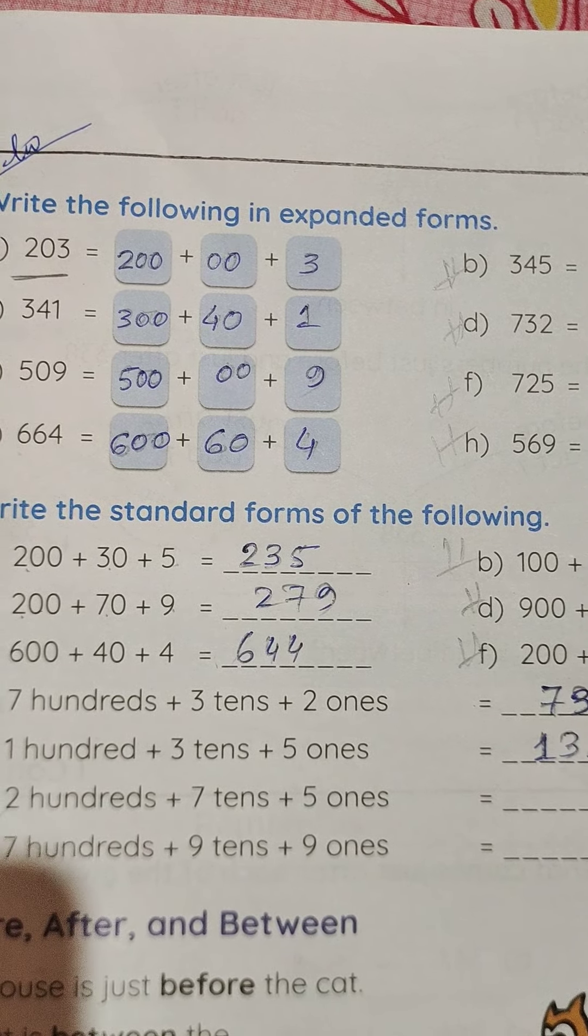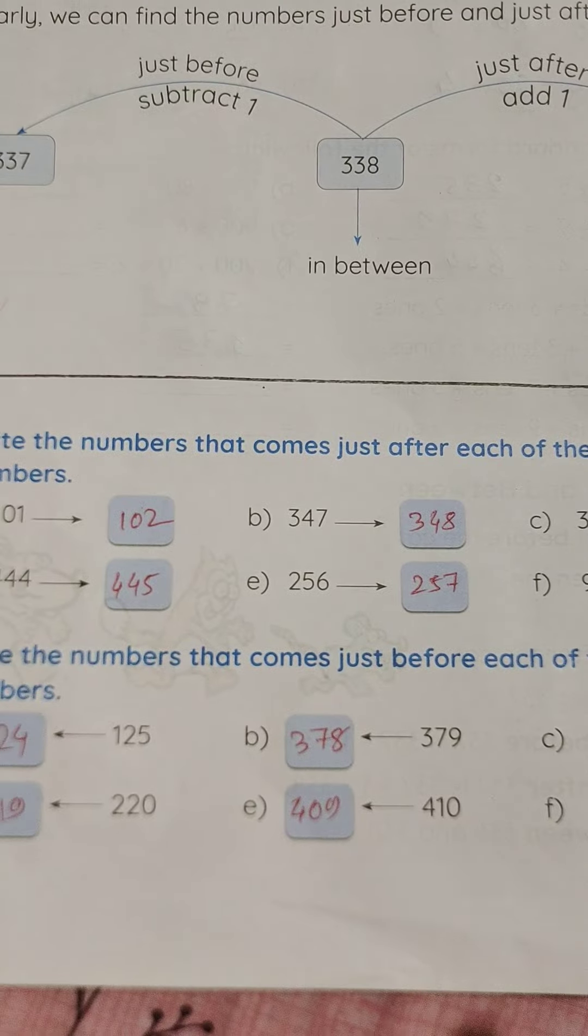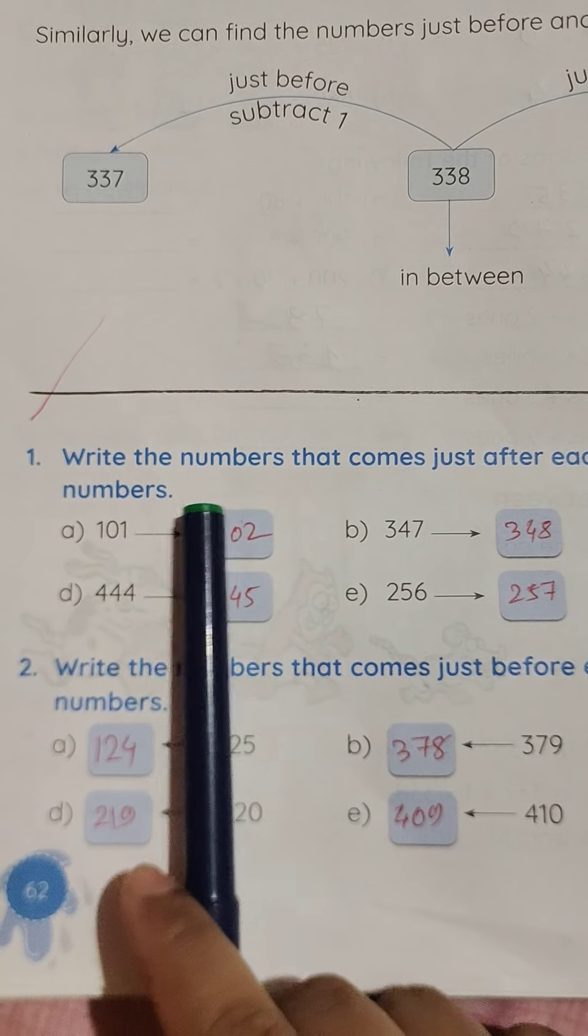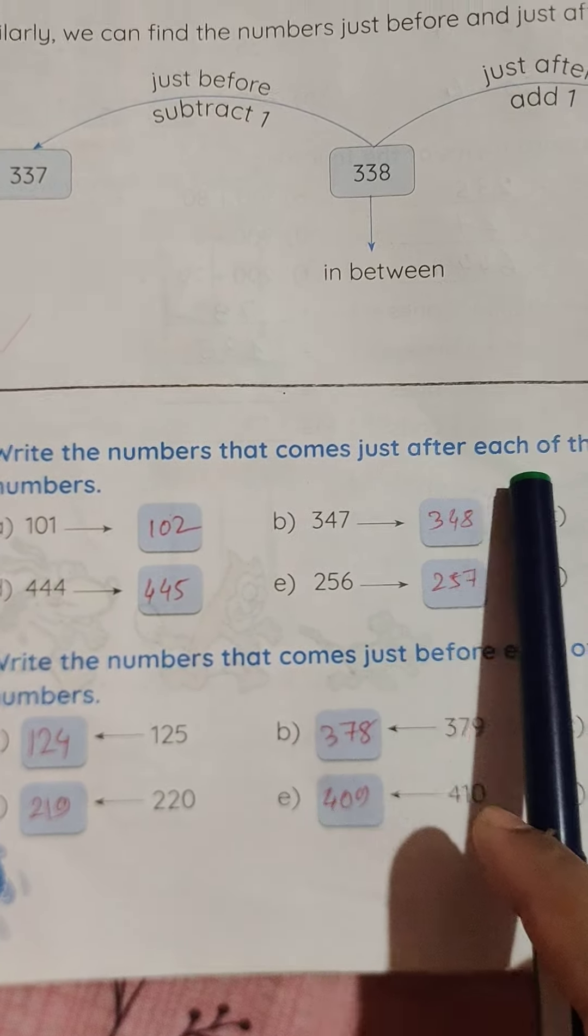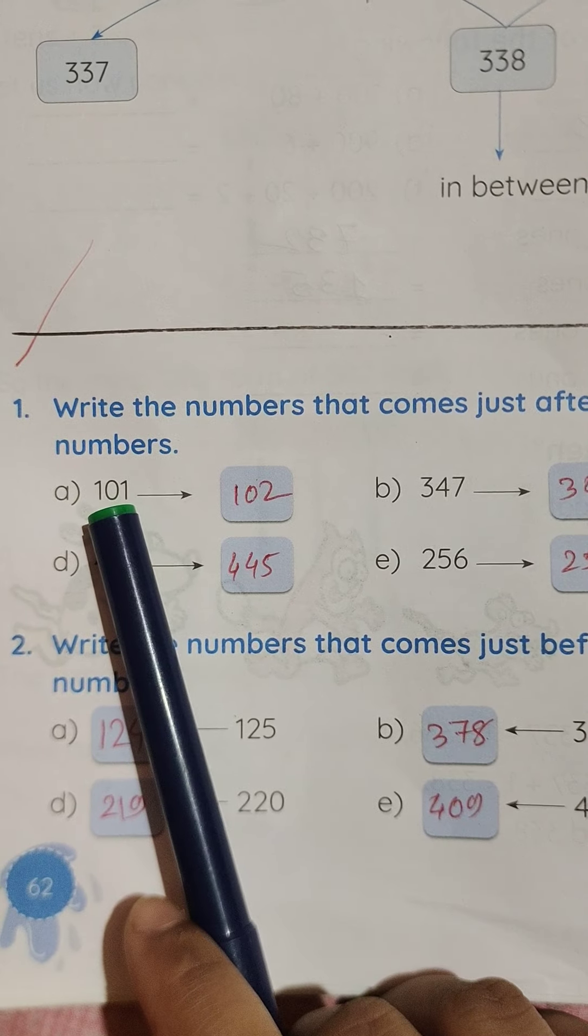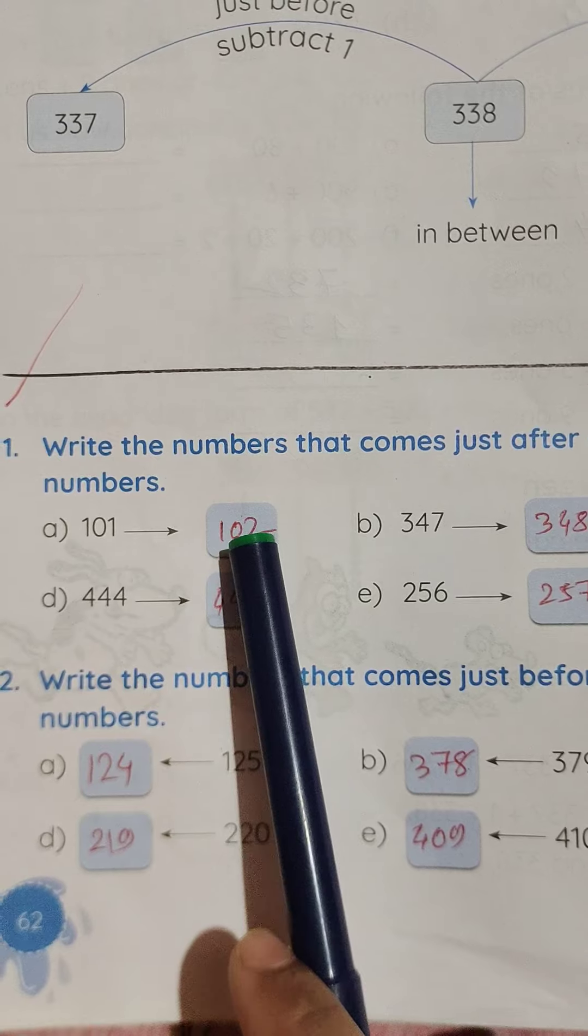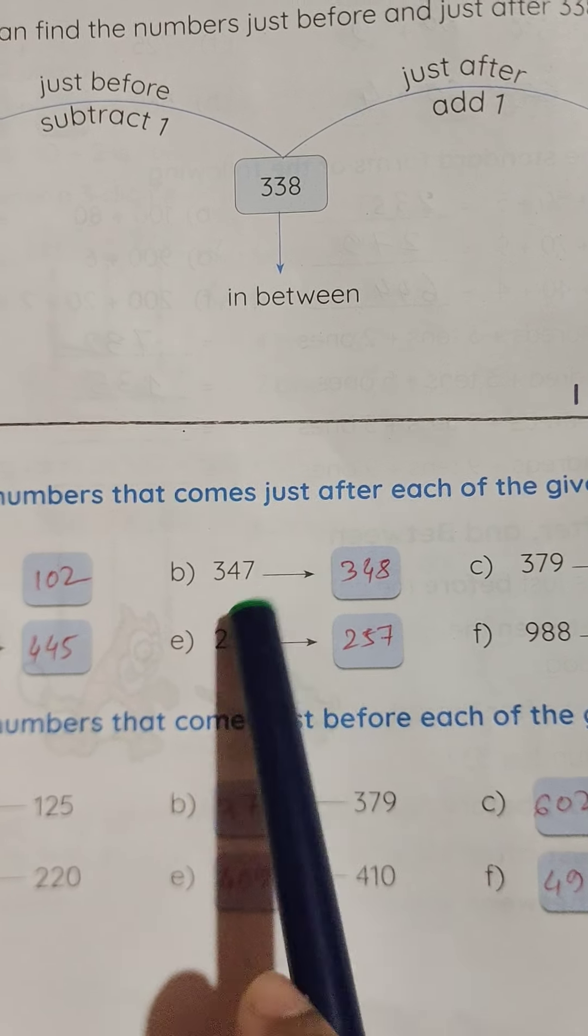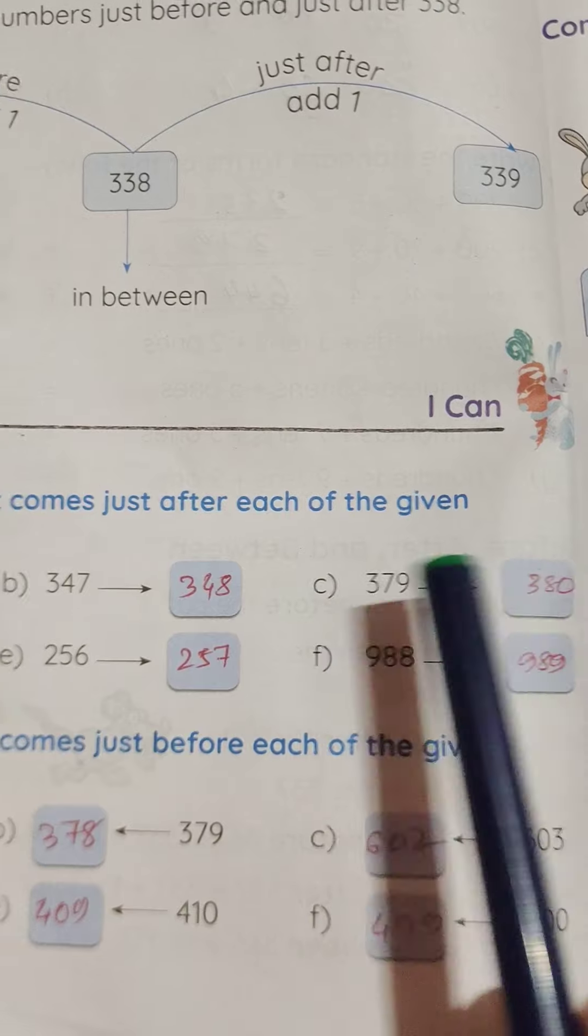Turn over the page. Here is the new class work. Write the numbers that come just after each of the given numbers. 101, after that 102. 347, 348. 379, 380.